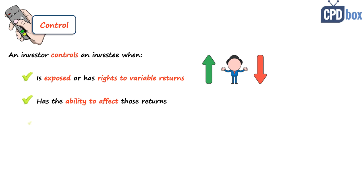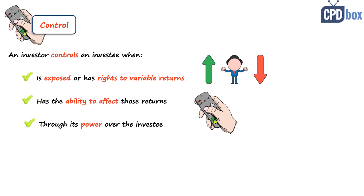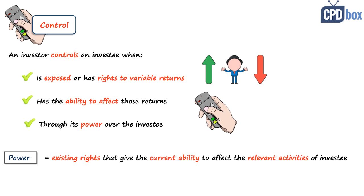Additionally, an investor has the ability to affect those returns through its power over the investee. The focus here is on power, and IFRS 10 defines it as the existing rights that give the current ability to direct the relevant activities of the investee. Relevant activities are those that substantively affect the investee's returns, and may include, for example, purchasing decisions, research and development, and so on. The existing rights must be substantive.